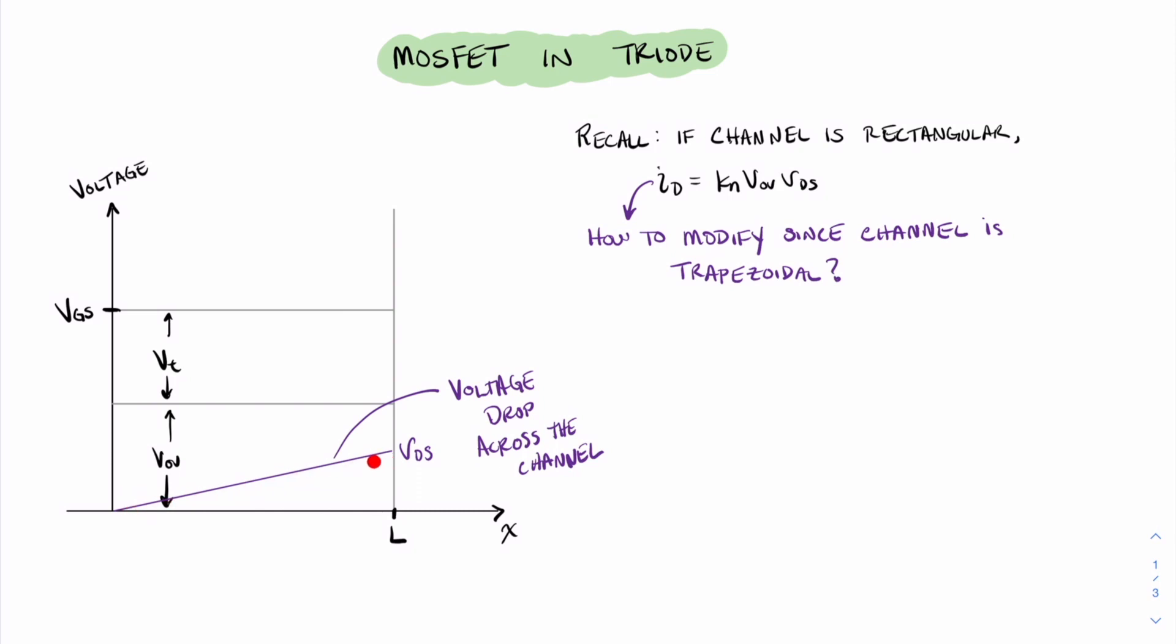The fact that this line is straight actually makes our job pretty easy. We can define a few things. And in particular, it is pretty nice to be able to define things at the halfway point. Why the halfway point? Well, because that will give us an average value about how this voltage here, VDS, changes the shape of the channel.